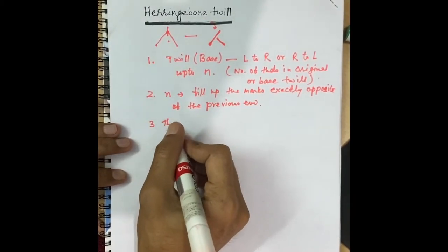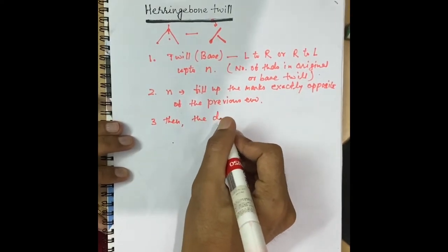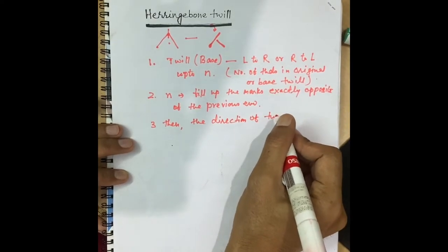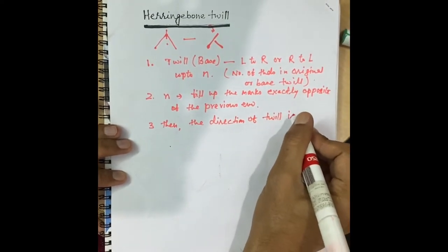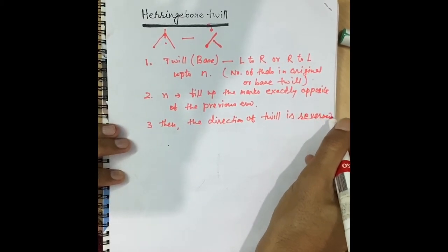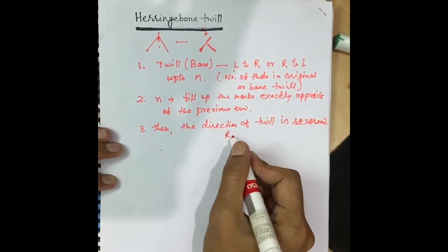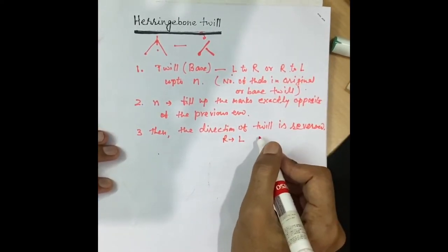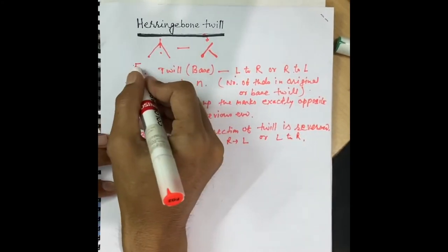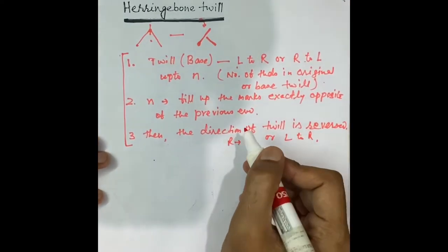Then the direction of twill is reversed. If you are going left to right in the first step, here it will be right to left, and vice versa. By following these three steps, we can construct any variation of herringbone twill.